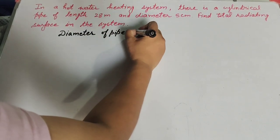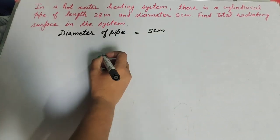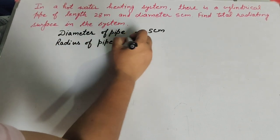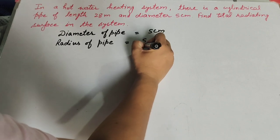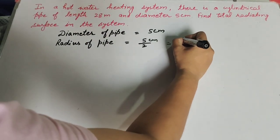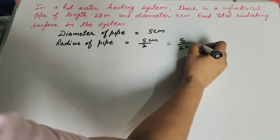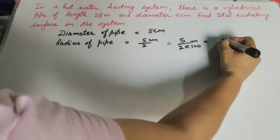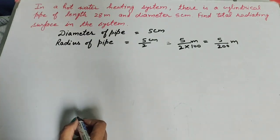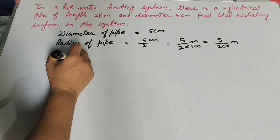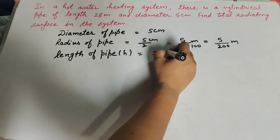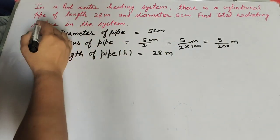The diameter of the pipe is equal to 5 centimeter. We find radius of pipe: radius of pipe is equal to diameter divided by 2, diameter is 5 centimeter divided by 2, so 5 over 2. But length of pipe is in meter and radius is in centimeter, so we change this unit from centimeter to meter — we divide by 100 — so 5 over 200 meter. Length of pipe h is equal to 28 meter.